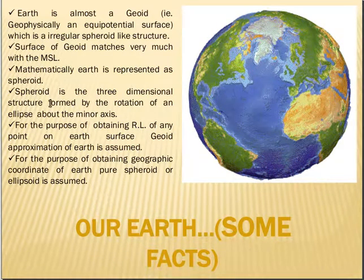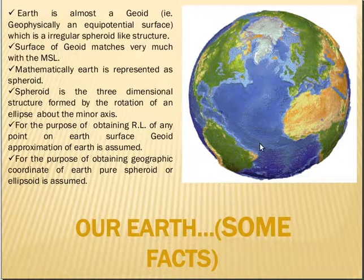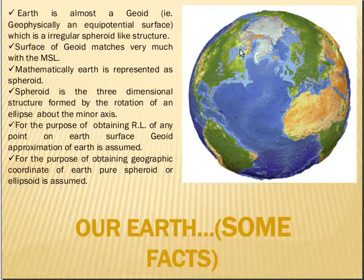What it has instead is undulations here and there. The direction of gravitational pull can be determined by dropping a normal onto a point on the geoid. If we want to locate any particular position on the surface of the earth, we cannot do it directly — we need a mathematical representation of earth.